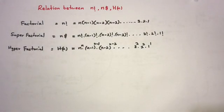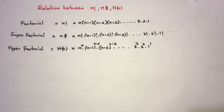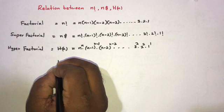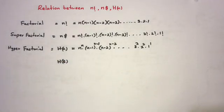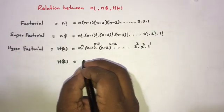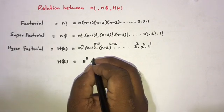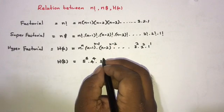Now let's find the relation between factorial, super factorial, and hyper factorial. Let's take the hyper factorial of 5. We can write this as 5 raised to the 5 power, times 4 raised to the 4 power, times 3 raised to the 3 power.